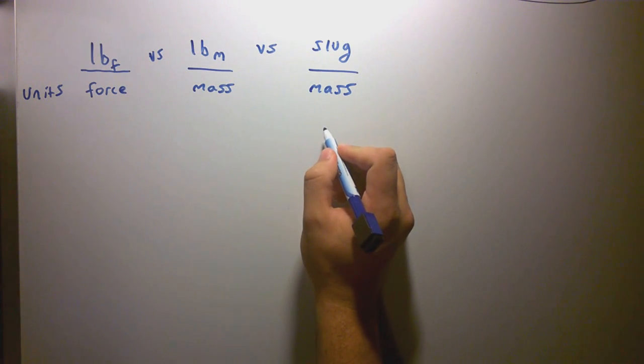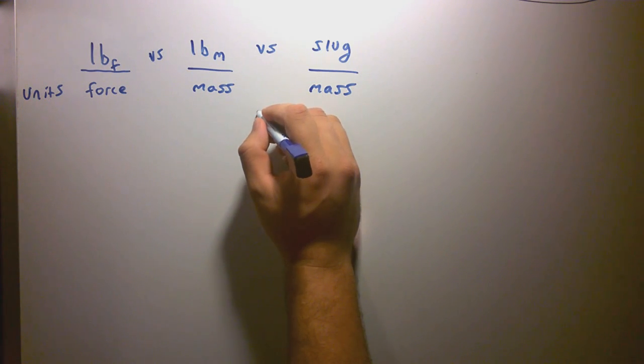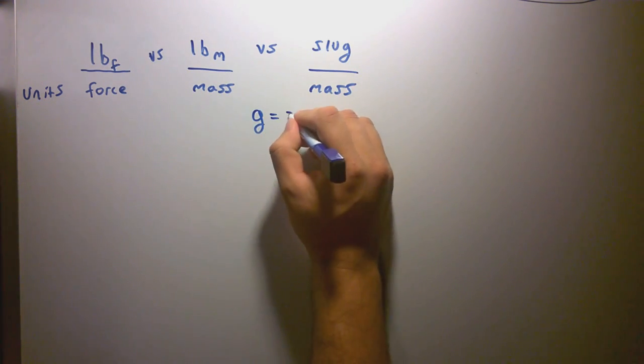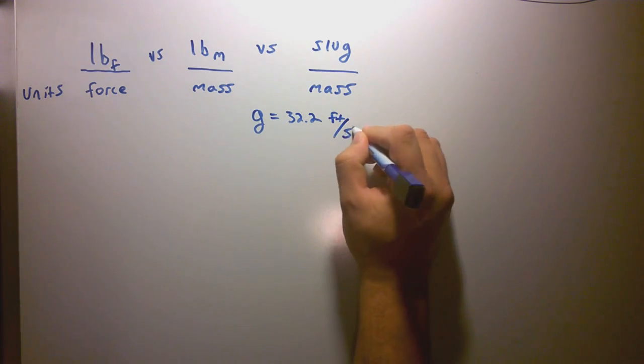The difference between a pound mass and a slug, they're both imperial units. The difference between them is a factor of g, or in the English system, roughly 32.2 feet per second squared.